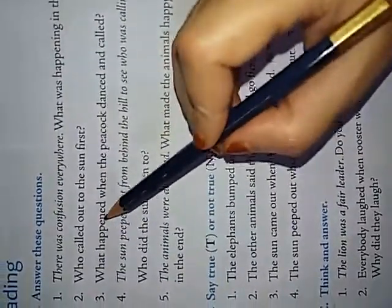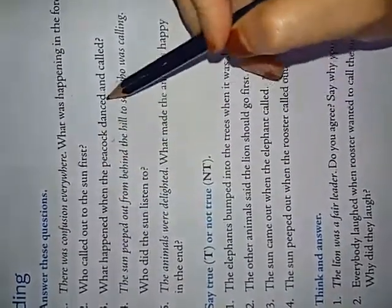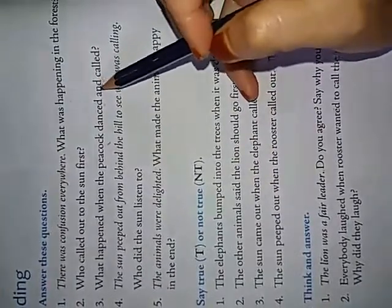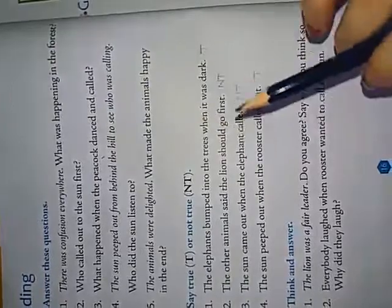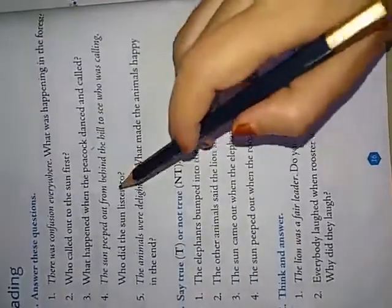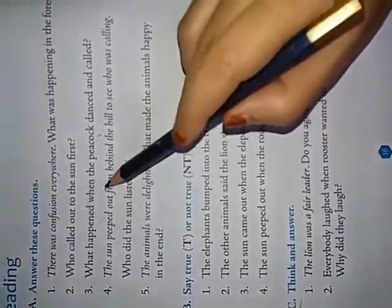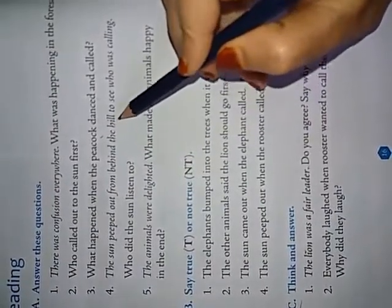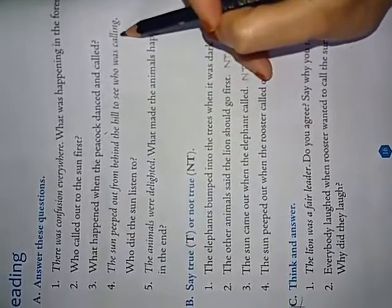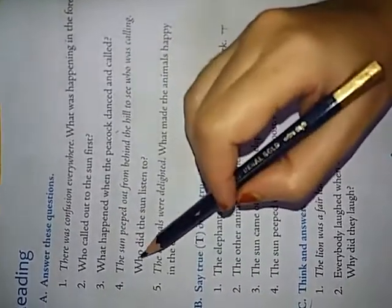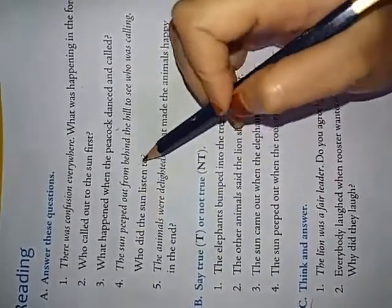Third, what happened when the peacock danced and called? When the peacock danced and called, the sun refused to come out behind the hill. Fourth question. The sun peeped out from behind the hill to see who was calling.